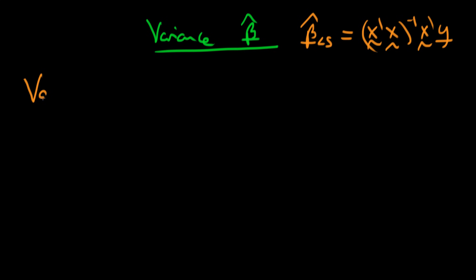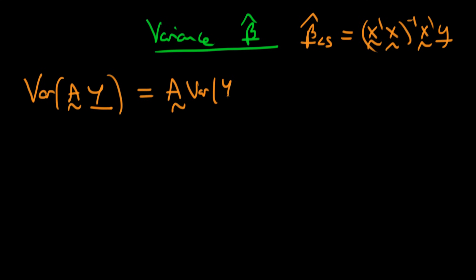One of them is that the variance of a product of a non-stochastic matrix A times the stochastic matrix Y is in fact equal to A times the variance of Y times A transposed. That holds for all particular matrices where we have a non-stochastic matrix A and a stochastic matrix Y.